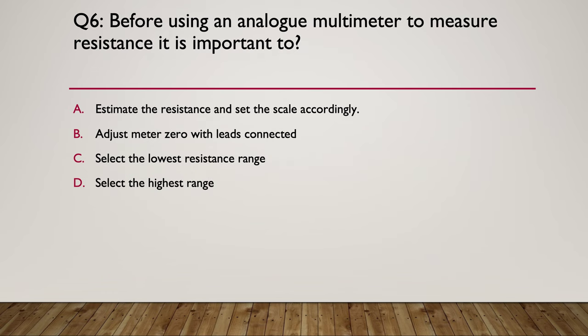Question six: before using an analog multimeter to measure resistance, it's important to do what? A) estimate the resistance and set the scale accordingly, B) adjust the meter to zero with the leads connected, C) select the lowest resistance range, or D) select the highest resistance range. Pause here while you think about it.